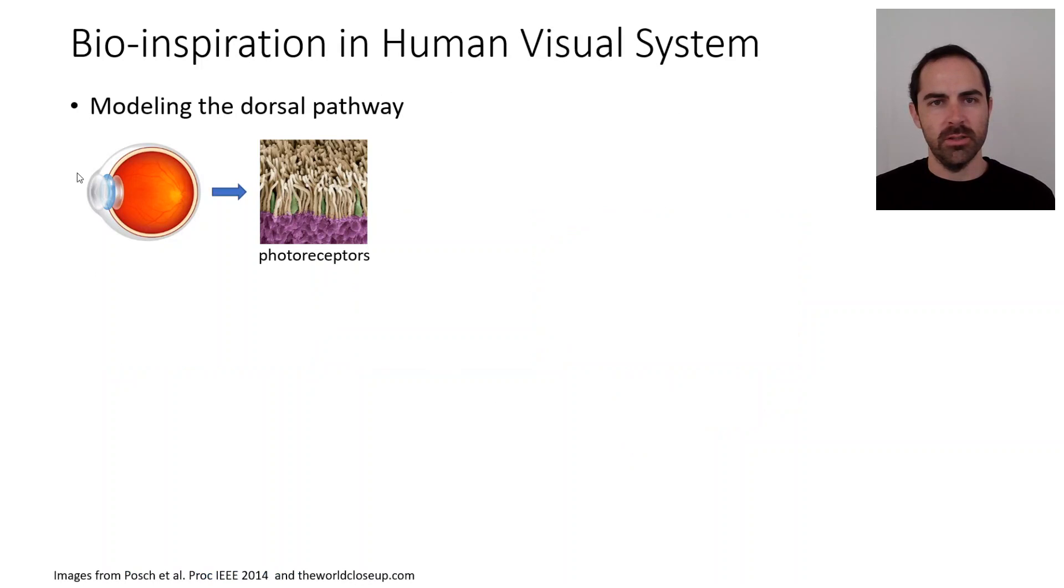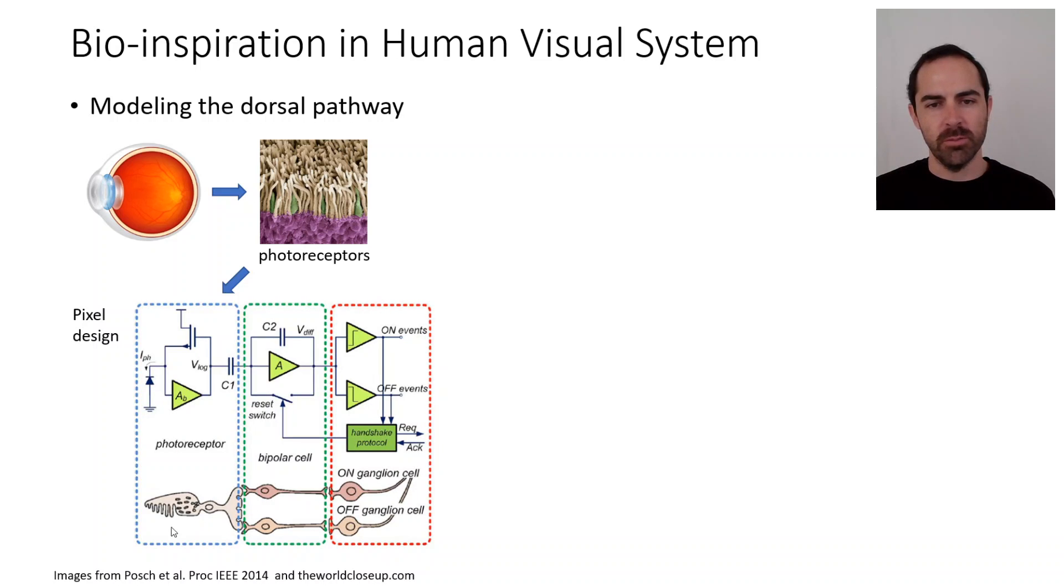Let's look at how these pixels are designed. They are modeled in the transient pathway, also called the dorsal pathway. We have the eye, light comes through the eye, it goes through the photoreceptors, and the photoreceptors are connected to some bipolar cells and ganglion cells. This diagram is saying that each pixel of the DVS, the dynamic vision sensor, or the change detector in the case of the APS, is designed following the principles of the human visual system.